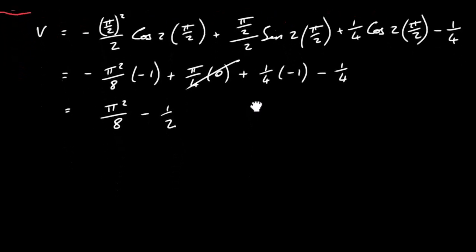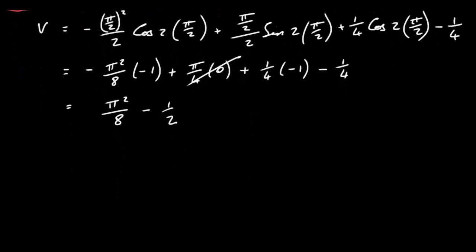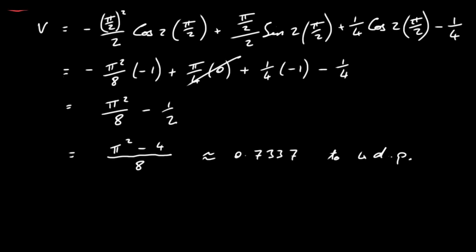So v = π²/8 - ½. Using a common denominator of 8: v = (π² - 4)/8, which is approximately 0.7337 to 4 decimal places. That concludes part A, which was quite a lengthy part.